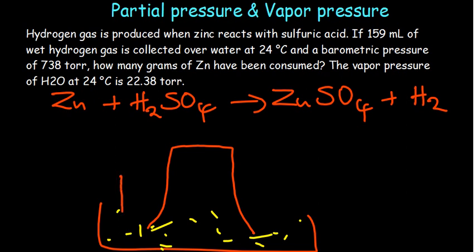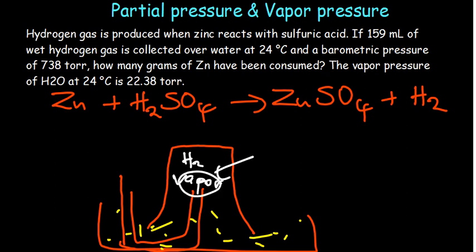And then you find that on top there, you have production of hydrogen gas. Now, every collection over water, you expect that there should be presence of vapor on top as well, on top of the water. So we've got vapor pressure and hydrogen gas as a mixture.